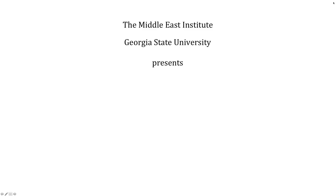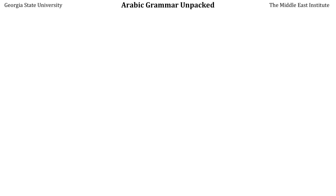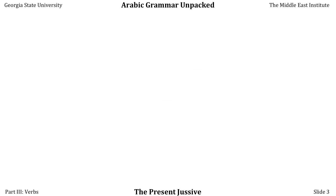The Middle East Institute at Georgia State University presents Arabic Grammar Unpacked. In this video, we will be discussing what's called the muḍāriʿ majzūm, or present jussive. This is the third of the three forms of the present tense.